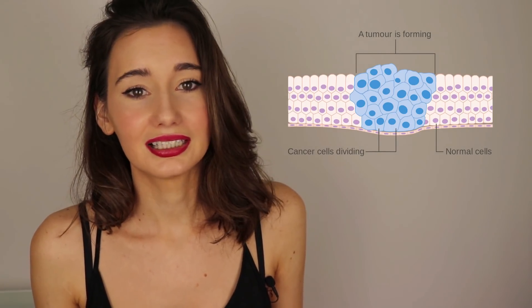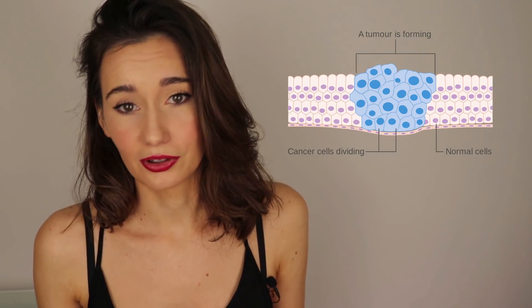This lump of cells is, as you probably already know, called a tumour. A tumour can contain millions of cancer cells, and a primary tumour is where the cancer starts.